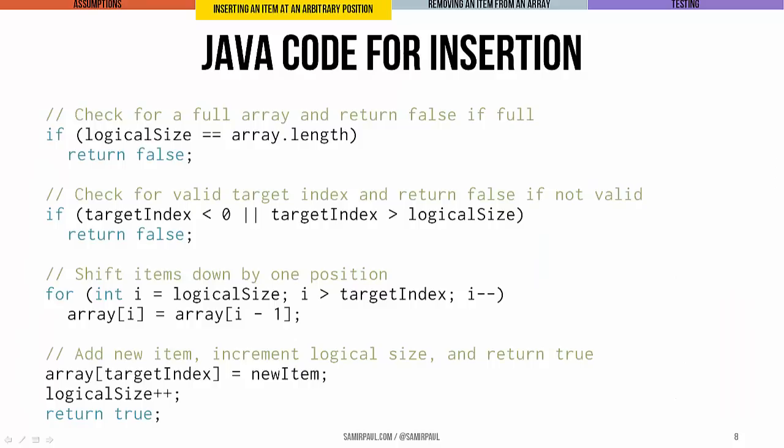Here's the Java code for the insertion operation. First we're checking to make sure that the array is not full - if it is, we return false. We're going to look to make sure that the target index is valid, and if it's not valid, that is if it's less than zero or it's greater than the logical size, we're going to return false as well. Then we do our shift. We start at the logical end, all the way at the end of the array, and we do our shift starting from there, working backwards to the target index. Finally, once we've cleared space for the new item, we can just do our simple assignment and store it right there in the array. We want to increment our logical size and return true. Easy peasy.